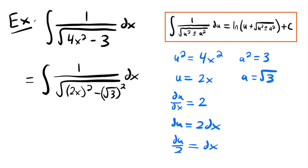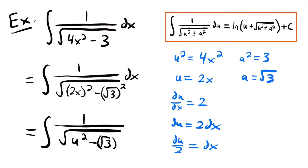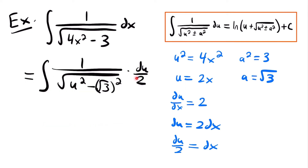And so now we can rewrite this integral entirely in terms of u. We'll have that this is equal to the integral of 1 divided by the square root of u squared minus (√3) squared, times du divided by 2. We replaced 2x with u, because that's what we set it equal to, and we replaced dx with du divided by 2. And so if we clean up our work here, we can pull this one half out to the front of the integral. And so now we can integrate this integral using this integration rule.